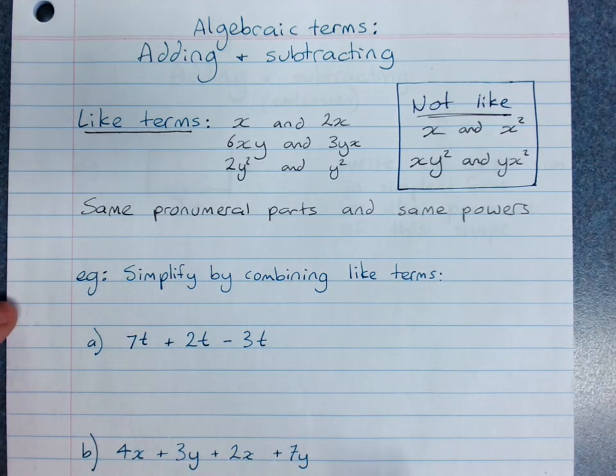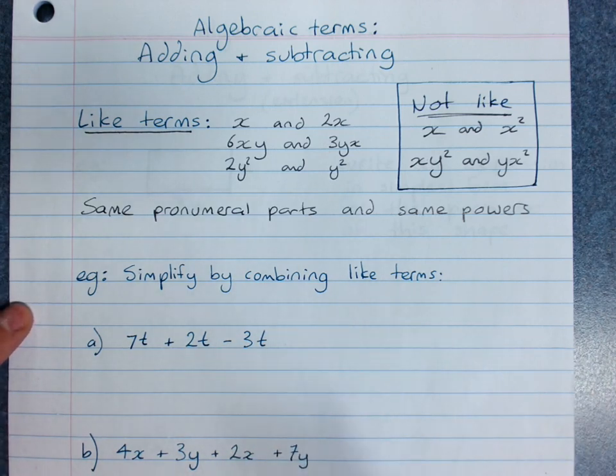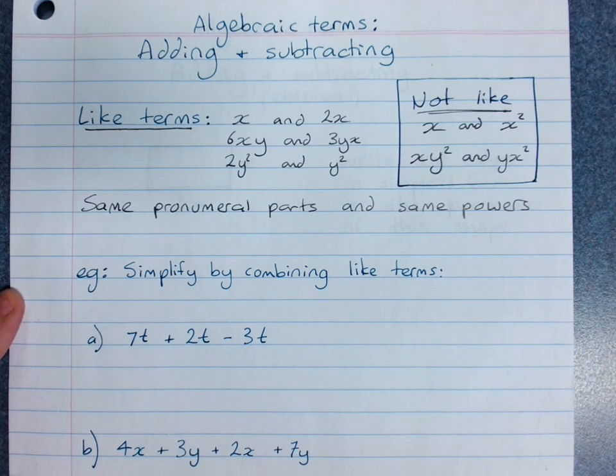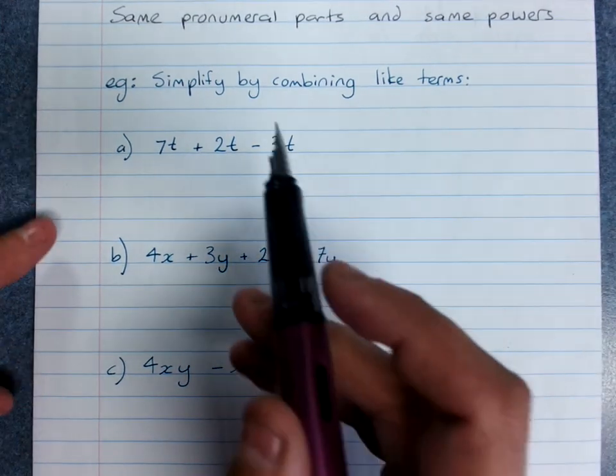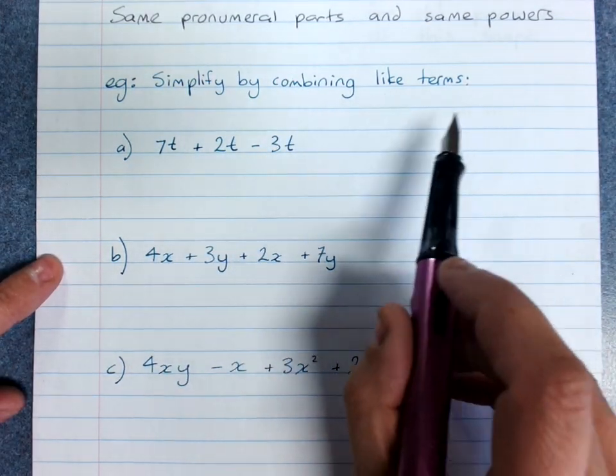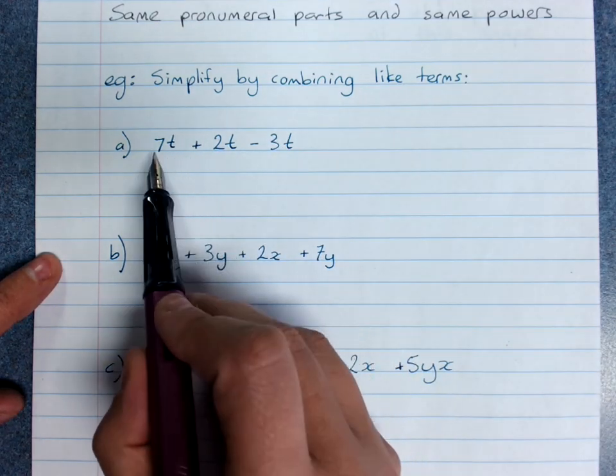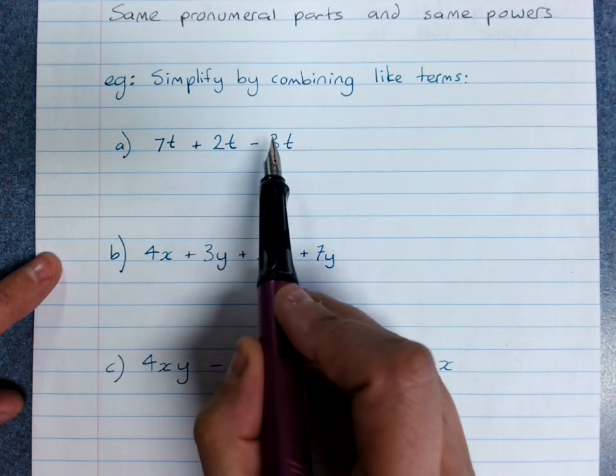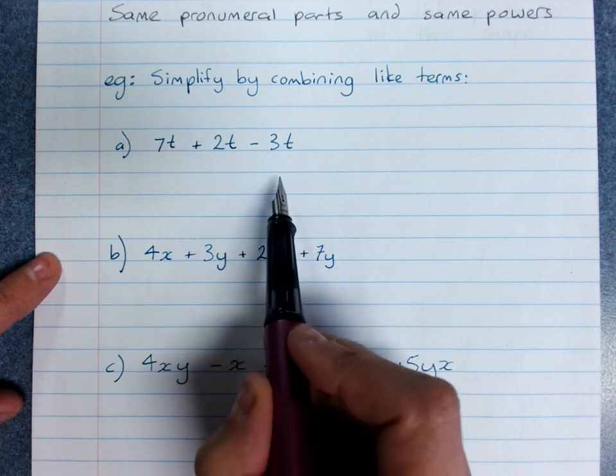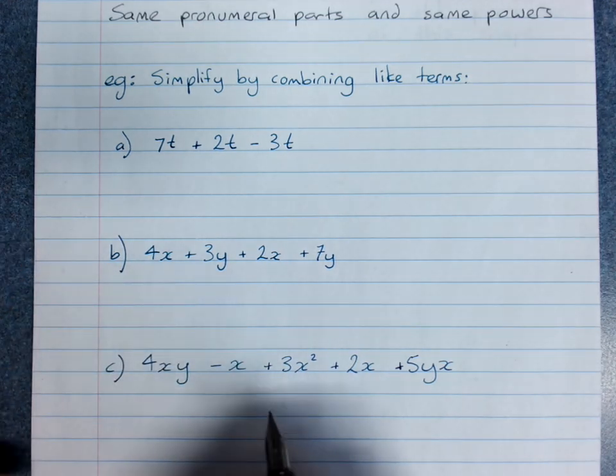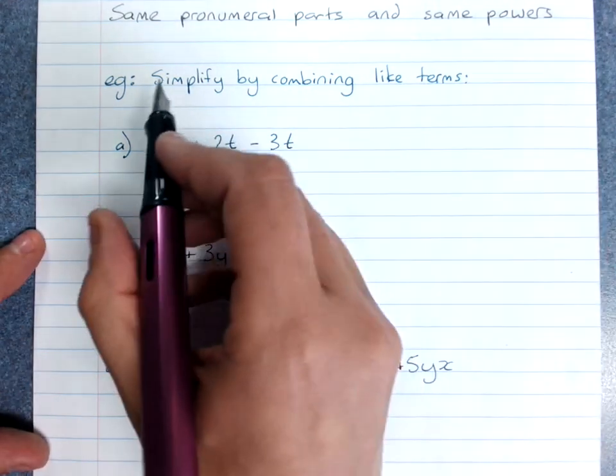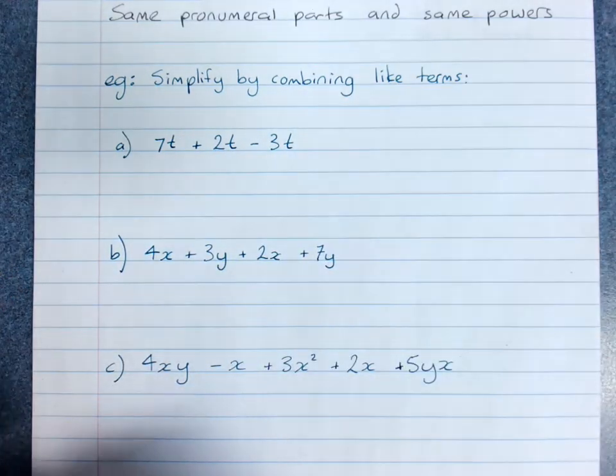Now the reason we're looking for like terms when we're adding and subtracting is that we're just counting identical things when we add and subtract, and we're simplifying to do that. So if I'm asked to simplify by combining like terms, this reads as 7 lots of t plus 2 lots of t minus 3 lots of t. So really I'm just working out how many lots of t I have, whatever t is.